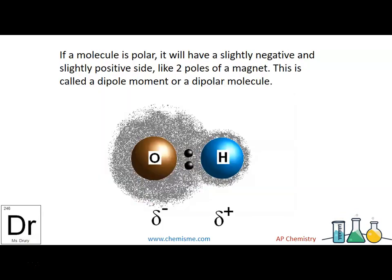Oxygen has more protons and an ability to pull electrons over towards it more of the time. So it's going to have slightly more electrons than it has protons and be slightly negative. Whereas hydrogen is not going to see its own electrons as much. And it will be slightly positive. That's what we call polar.